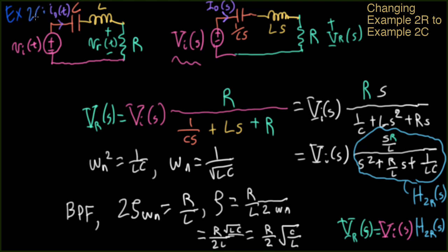Okay, so let's do example 2C. And here, instead of taking the voltage across the resistor as our output voltage, we'll take it across the capacitor. I'm just erasing this here in order to make some space.